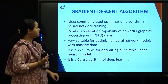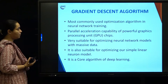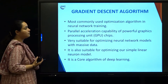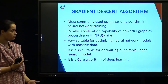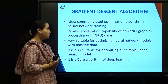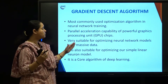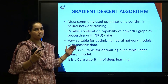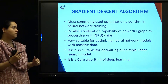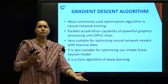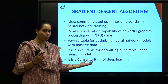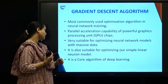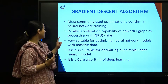The gradient descent algorithm is the most commonly used optimization algorithm in neural network training. It leverages the parallel acceleration capability of powerful GPU chips and is very suitable for optimizing neural network models with massive data. It overcomes the problem with brute force algorithm — even with massive data it works — and is also suitable for the simplest models like the simple linear neuron model. It is a core algorithm for deep learning.